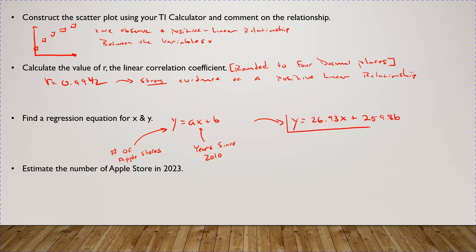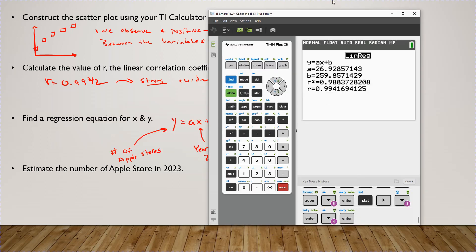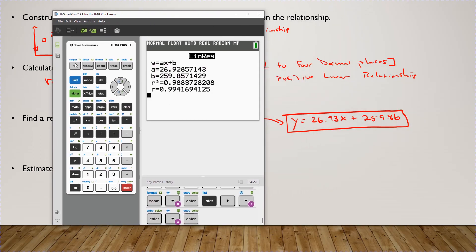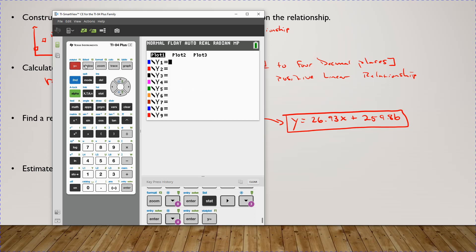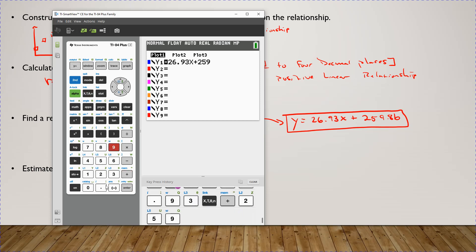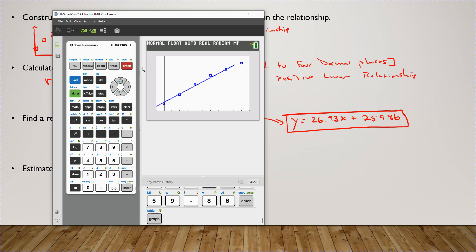Let me show you that this fits the data really well. Hit the Y equals button and enter 26.93 times X plus 259.86. Then just hit Graph, and look — you can see it fits the data really well.